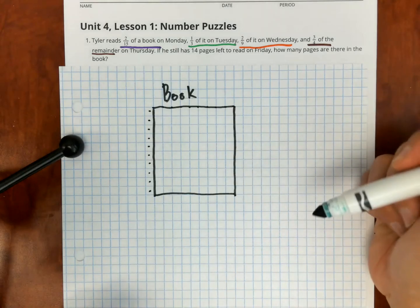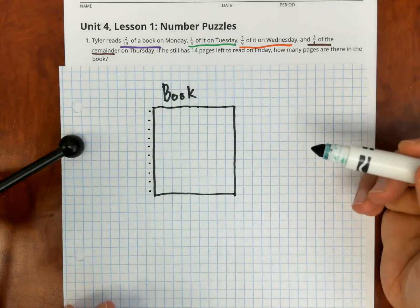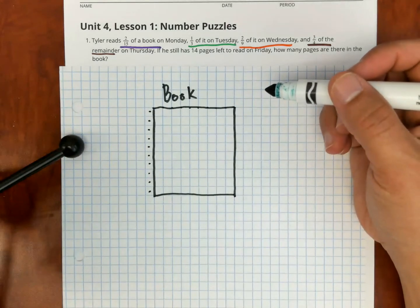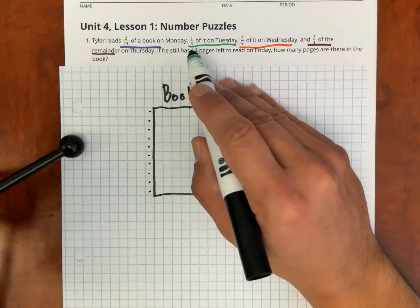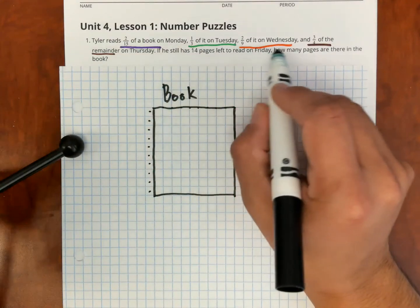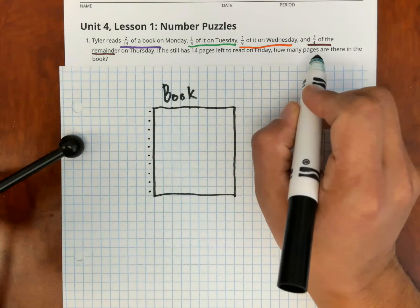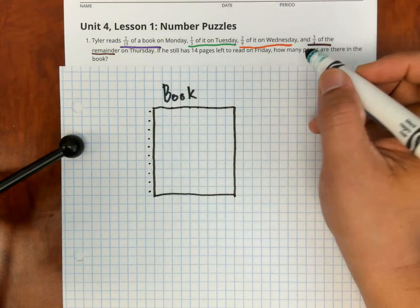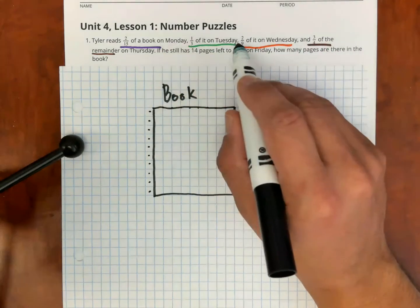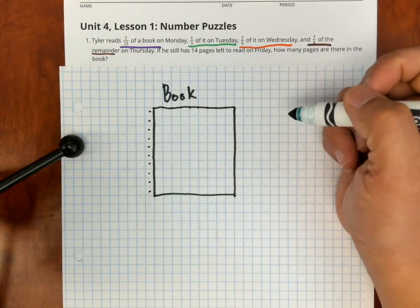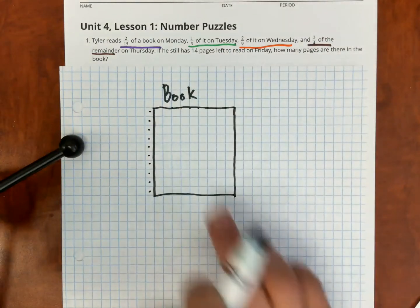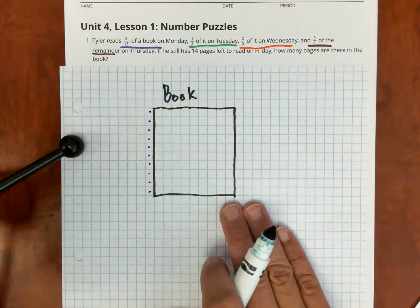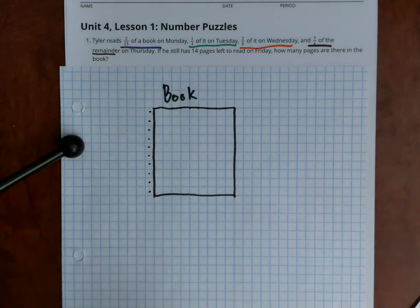Here's a visual representation of the book. I made this 90 squares because I'm looking at the denominators: 15, 3, 9, and 4. The common denominator for the first three is 90, so that's why I'm using it — it makes this easier. I made it a 9-by-10 rectangle to represent the book.